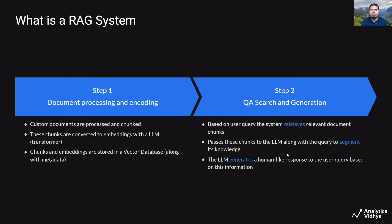These chunks are passed on to the large language model along with your query to augment its knowledge. Once the relevant document chunks related to a question are retrieved, our question along with those document chunks are sent to an LLM like ChatGPT, saying that given these relevant sources of contextual information, can you answer this question truthfully? The large language model then generates a human-like response to the user question based on this contextual information.